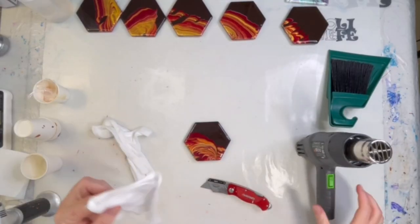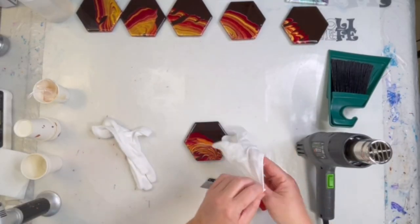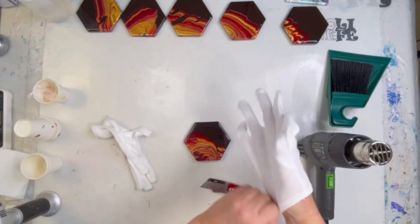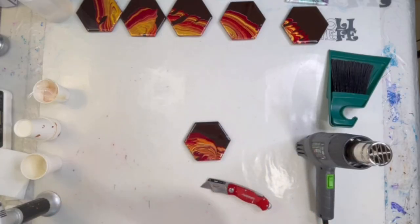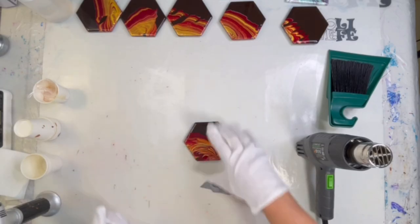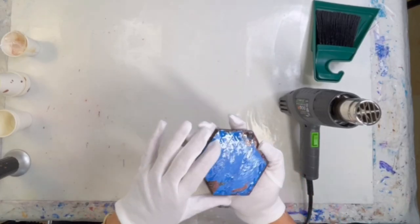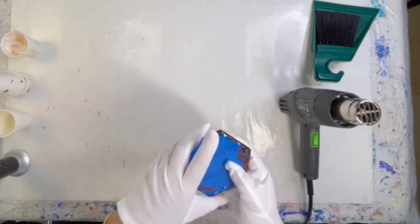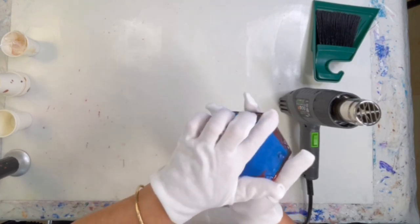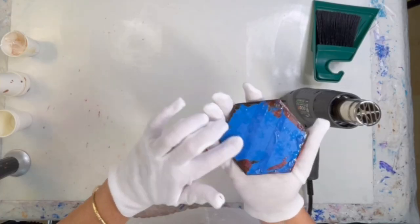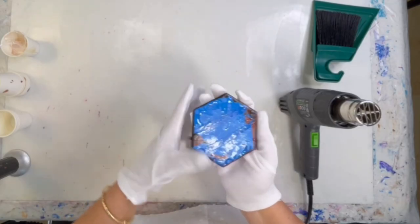All right, I have my heat gun. I've got gloves. I put the gloves on so I don't get fingerprints on my resin. It is still, you know, in that curing process. So, let's see. So, I'm going to start probably here. You can see where the resin pools and it's just going to come off so nicely.